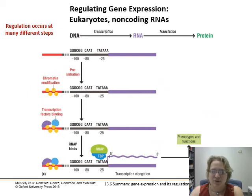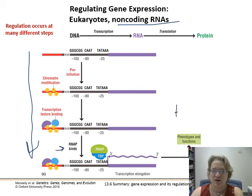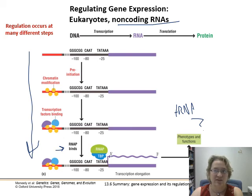This also applies to non-coding RNAs, because we have a lot of interesting non-coding RNAs. They still have to go through chromatin modification, transcription factor binding, and RNA polymerase transcription — then they go off and do other things. So tRNA, micro-RNAs, short interfering RNAs, long non-coding RNAs — lots of things whose functions we're still discovering. See you in Chapter 14.